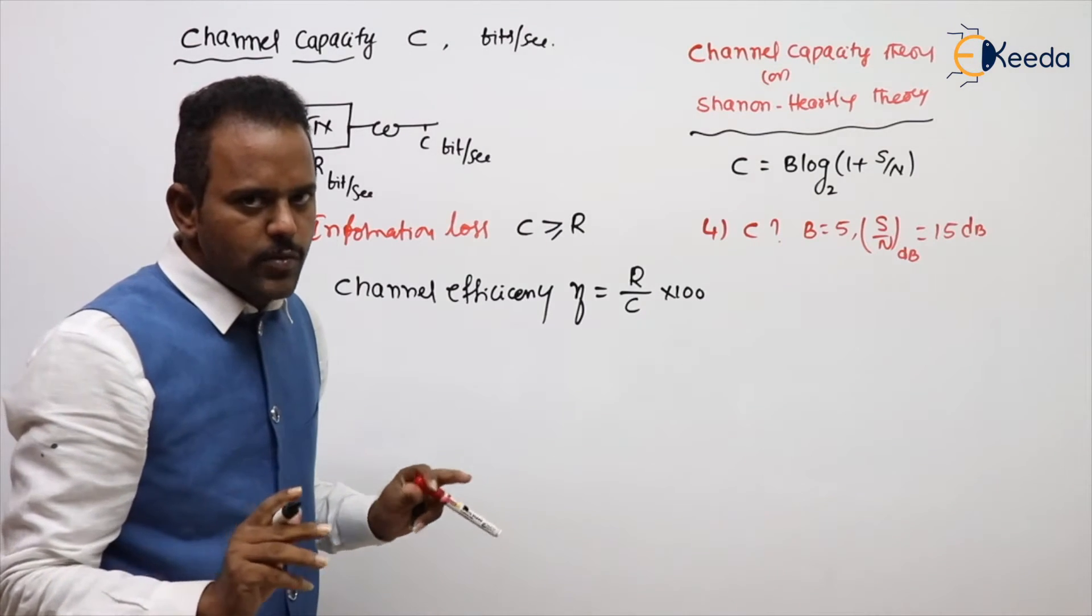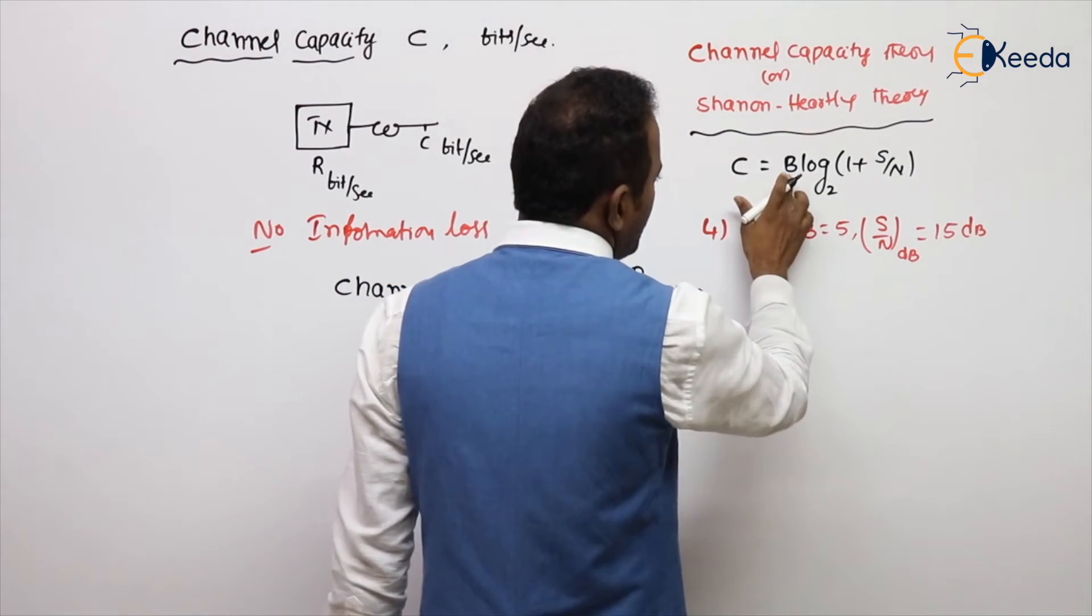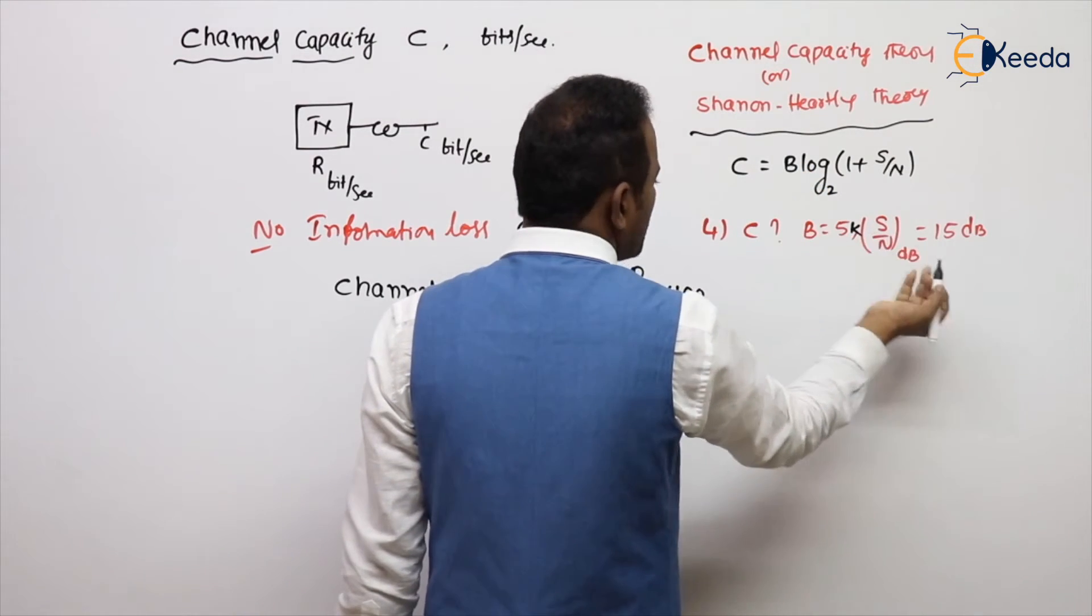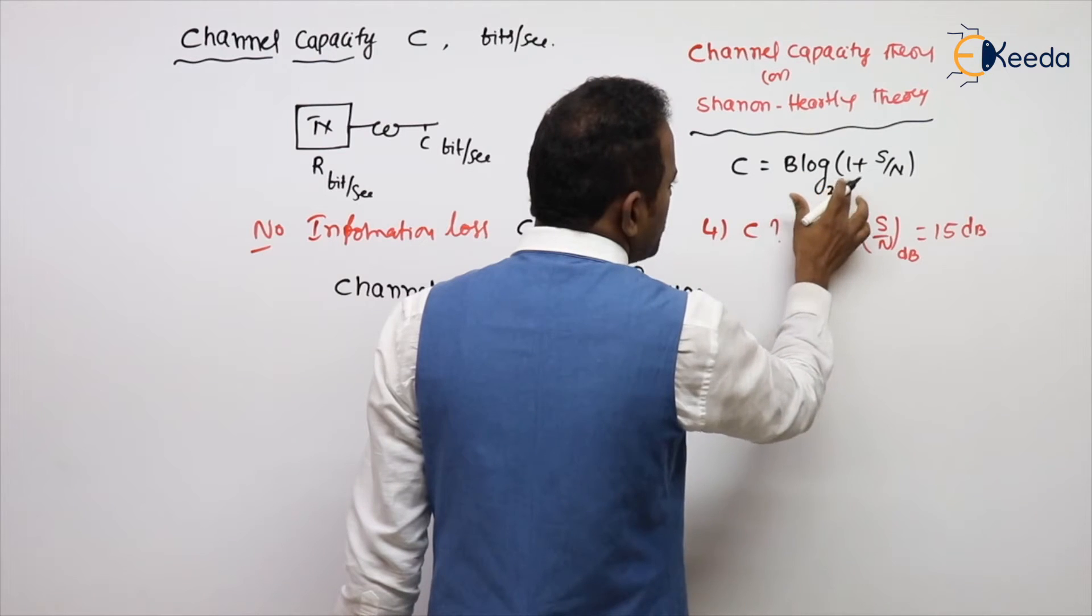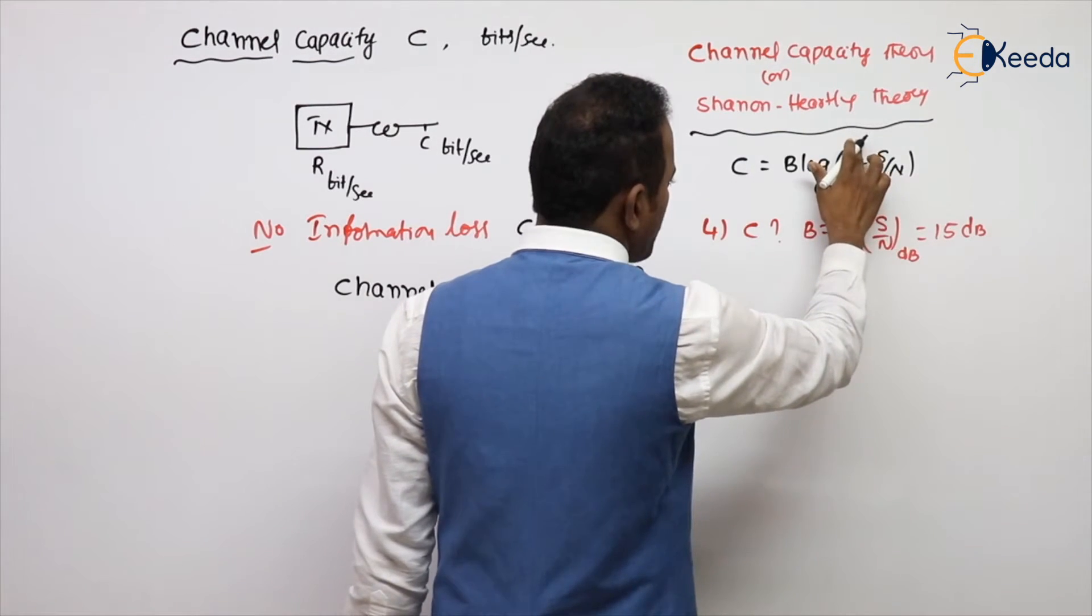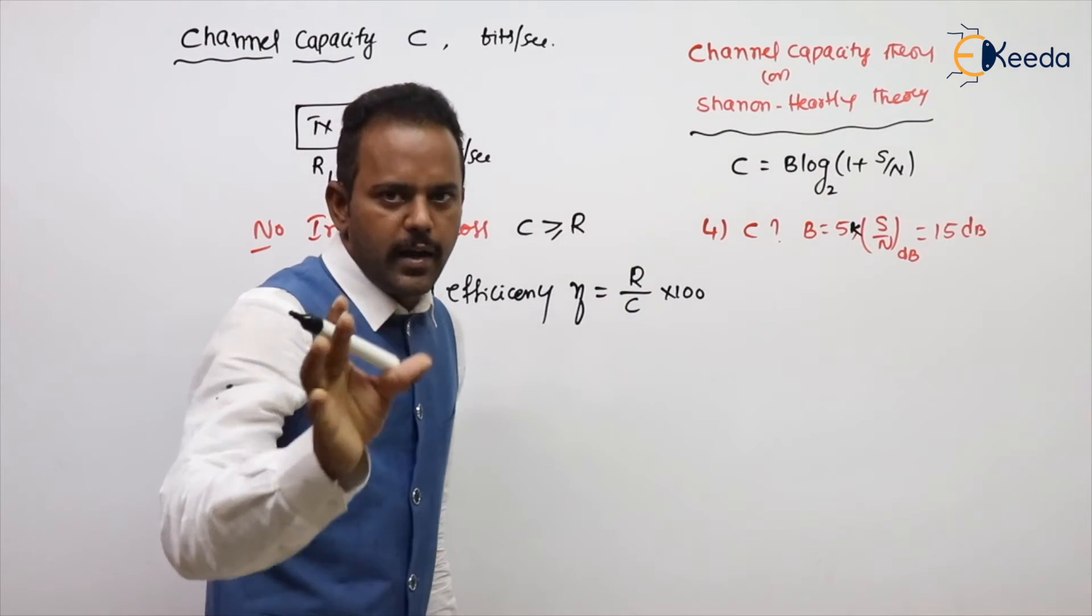Now we need to calculate the channel capacity. Generally what students will do is the mistake: simply C equals B times... B is given 5 kHz, so 5k log base 2 of 1 plus 15, 1 plus 15 is 16, so 2 to the power 4, so 4 times 5 is 20. It is a blunder.